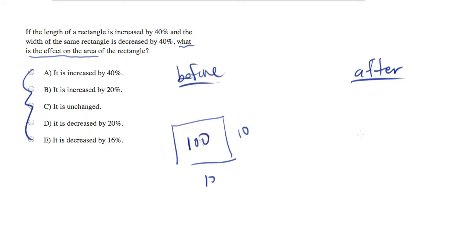Now let's see what happens when we increase the length by 40%. So let's go from 10 to 14, and we're going to decrease the width by 40%. So we're going to go from 10 to 6.